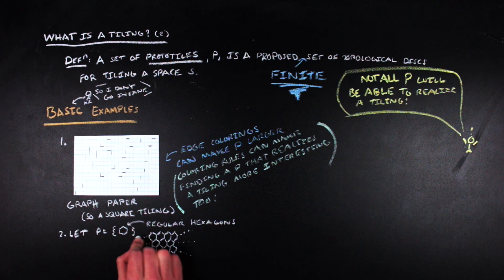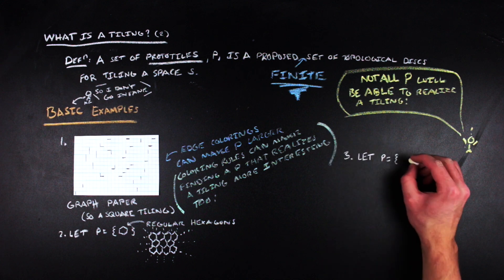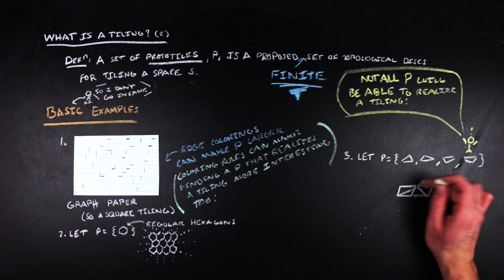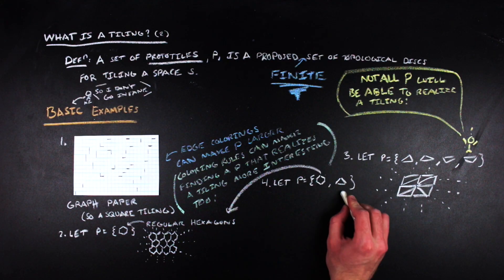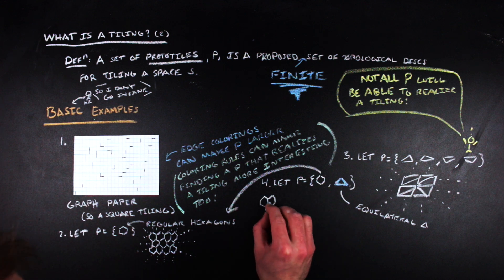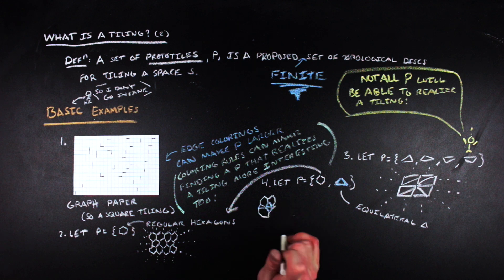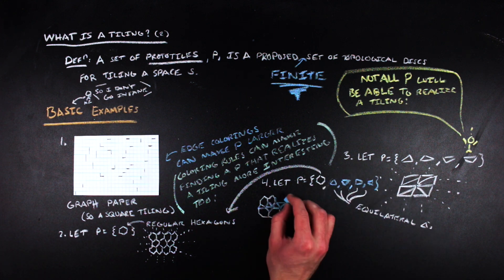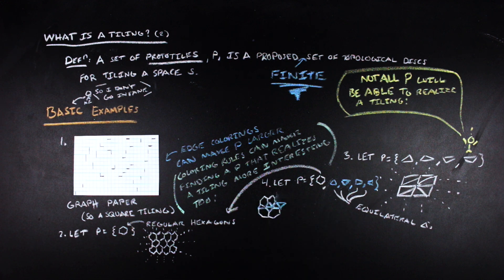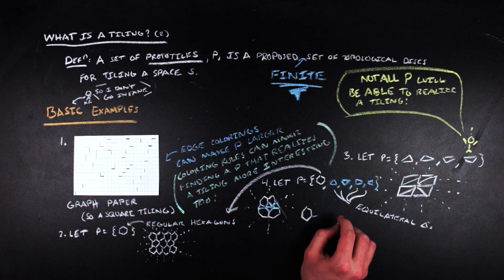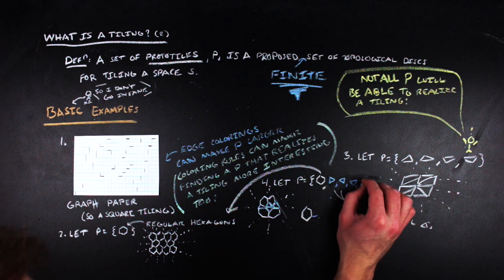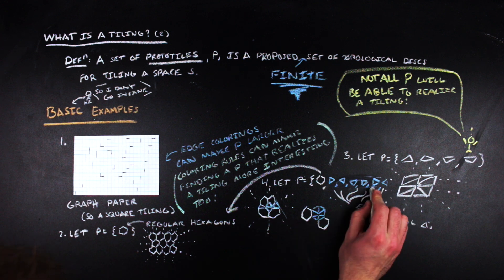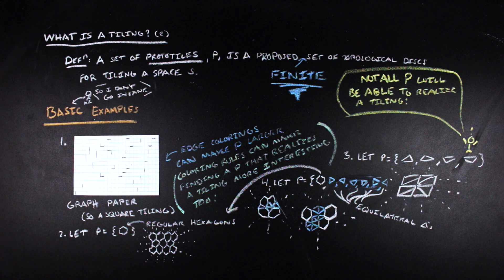Hexagonal tilings are also pretty common — that goes back to the honeycomb thing mentioned earlier. We can also have triangular tilings, and we can actually do this for any triangle, which is pretty cool. Forcing certain edge colorings and matchings would make the triangular tiling case more complicated as well. For variety, we can take a prototile set equal to a regular hexagon and certain rotations of equilateral triangles that fit within that hexagon, and form tilings using combinations of hexagons and equilateral triangles.